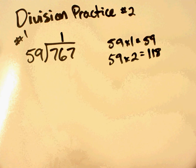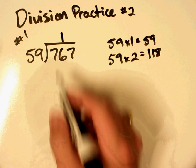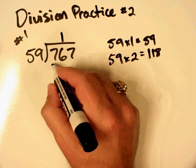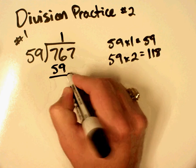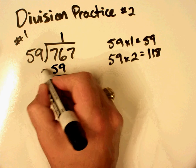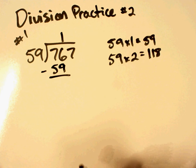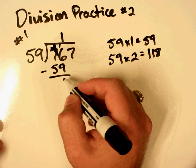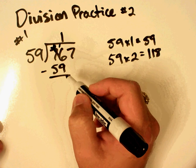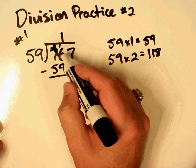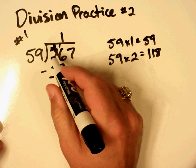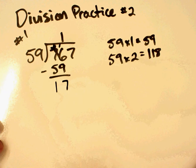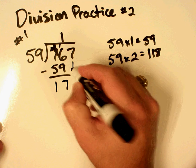Because if we go up to 59 times 2, we're going to get 118, which is too much. So, 59 goes into 76 one time. 1 times 59 is 59. Subtract. This becomes a 6. This becomes a 16. Sorry, that's an itty-bitty 6 there. 16 minus 9 is 7. 6 minus 5 is 1.